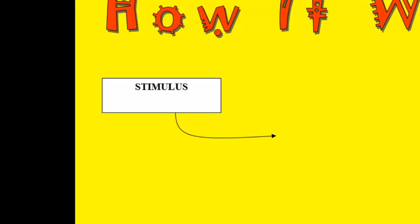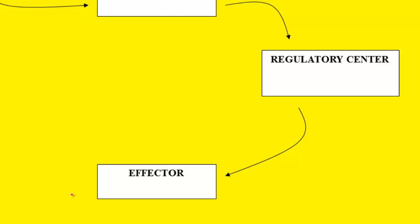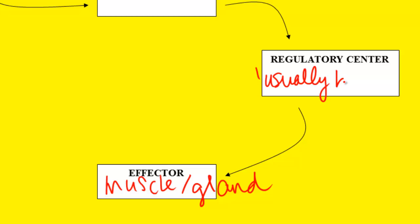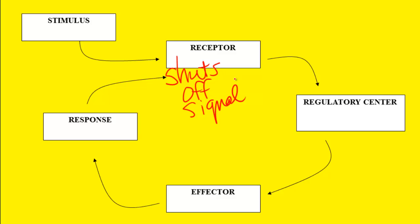This is how a negative feedback cycle works: it starts with a stimulus. A stimulus or change turns a receptor on. The receptor sends a message to the regulatory center — usually the brain. The regulatory center sends a message to an effector, which is usually a muscle or a gland that makes hormones. Once the effector is turned on, it causes a response and change in the body. That change brings you back to normal, and once you're back to normal, the receptor no longer needs to send the message, so it shuts off the signal.